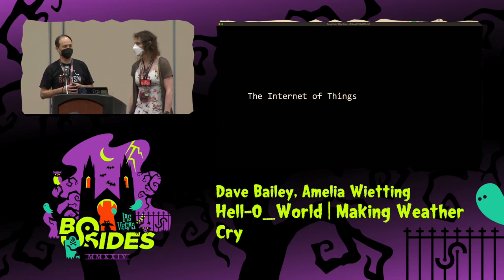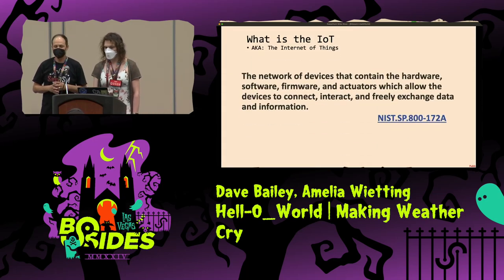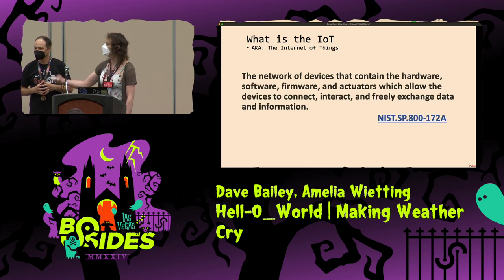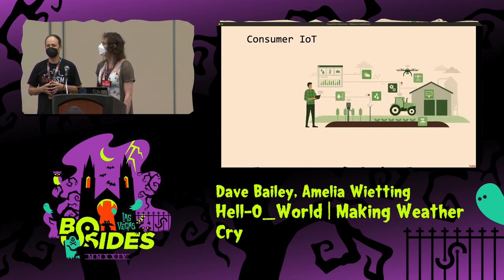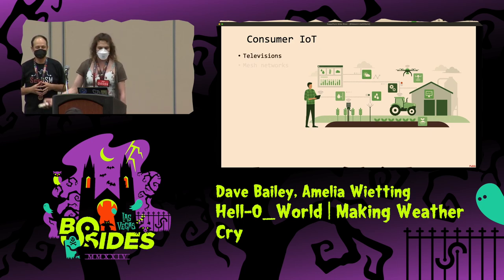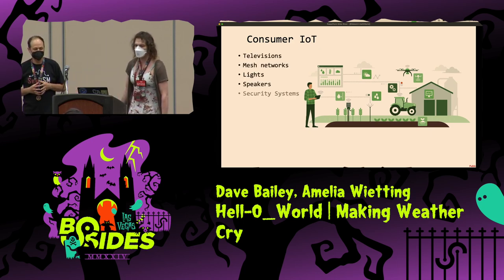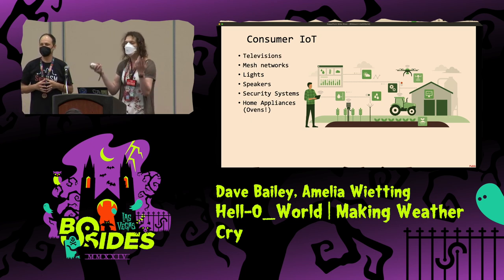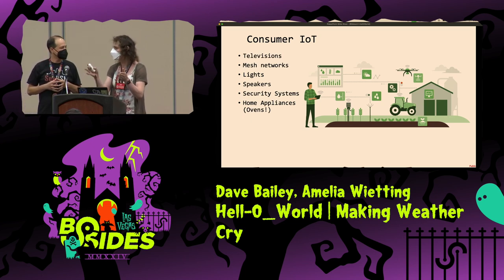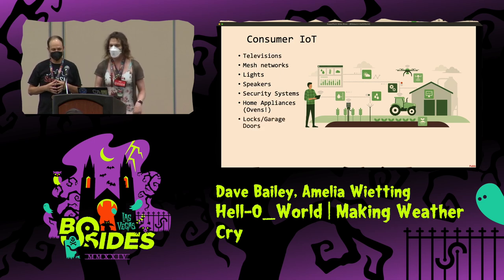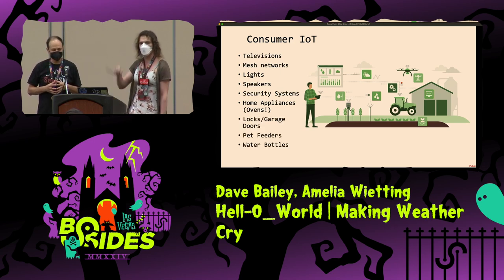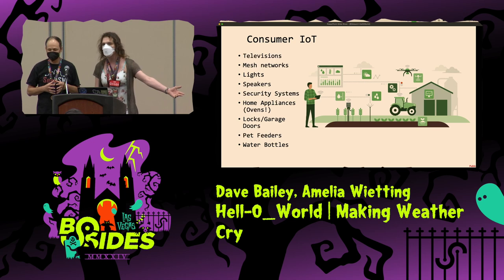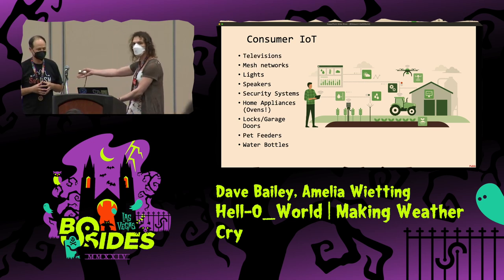What's the Internet of Things? NIST has an explanation, but we won't read it. Consumer IoT includes televisions, mesh networks, lights, speakers, security systems, home appliances, ovens — you can preheat your oven on the drive home. Locks, garage doors, pet feeders, water bottles, my coffee cup, Dave's neighbor's washing machine. Everything's connected.